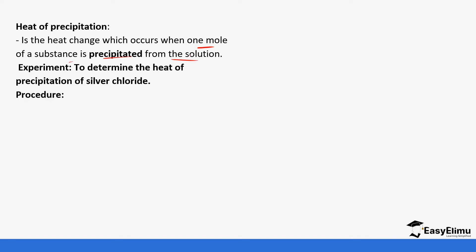For example, in the experiment to determine the heat change of silver chloride, we are going to do a precipitation reaction — it's more or less like a double precipitation reaction between solutions which are going to precipitate out the silver chloride.